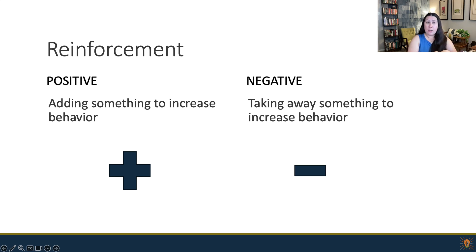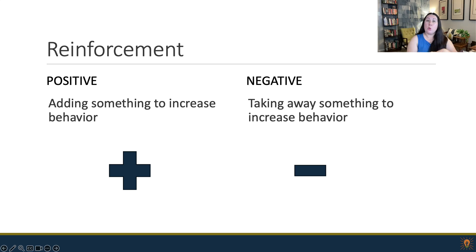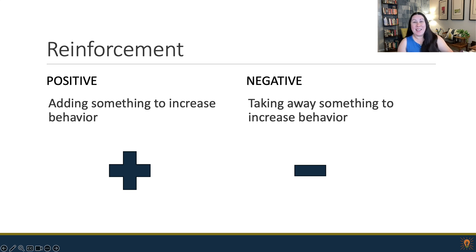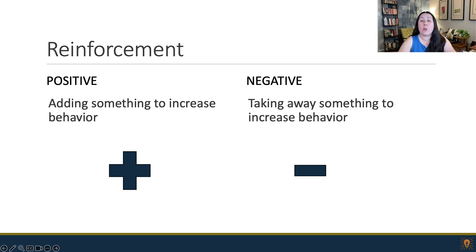In contrast, negative reinforcement is taking something away to increase a behavior. For example, in the United States, if you want people to wear seatbelts, there's that beep, beep, beep, beep when you haven't buckled up. You buckle in your seatbelt to get rid of that noise. That's negative reinforcement — your behavior of wearing a seatbelt increases because that noise is taken away. So there's this annoying noise if you don't wear the seatbelt, so you wear it to get rid of the noise.